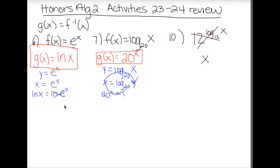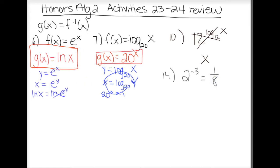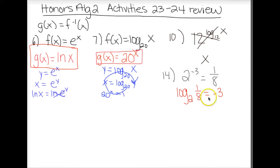The next section had you change an exponential into a logarithmic statement and vice versa. Looking at number 14, which started out as 2 to the negative third equals 1 over 8 — we're supposed to write it as a logarithm. You have to make sure the bases match. So the answer is log base 2 of one-eighth equals negative 3. That one started exponential and we wrote it as a logarithm.